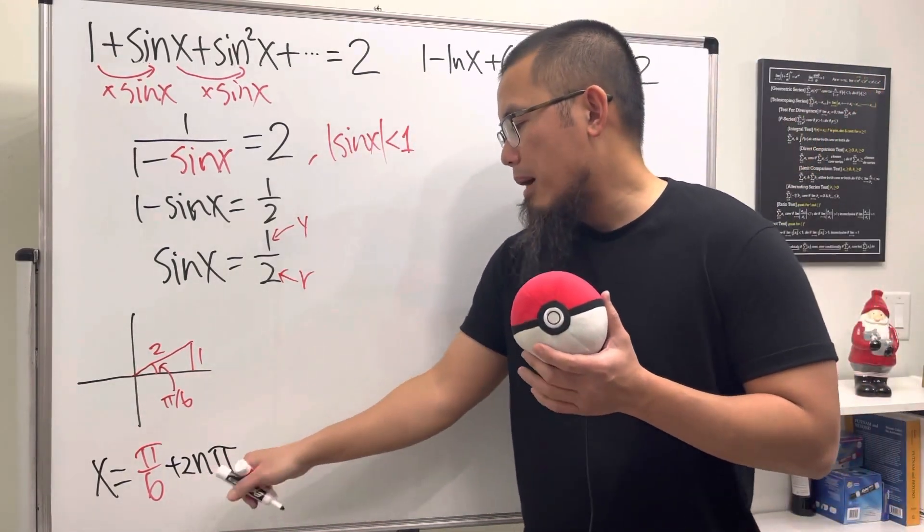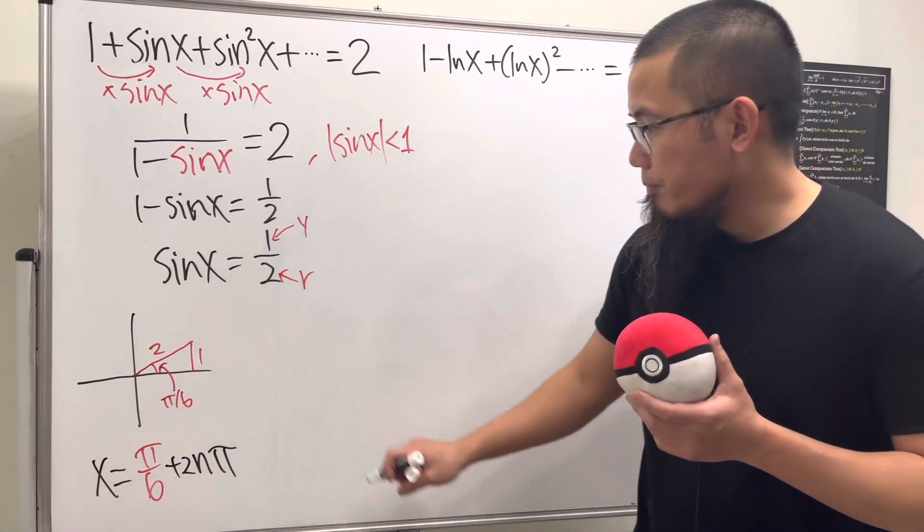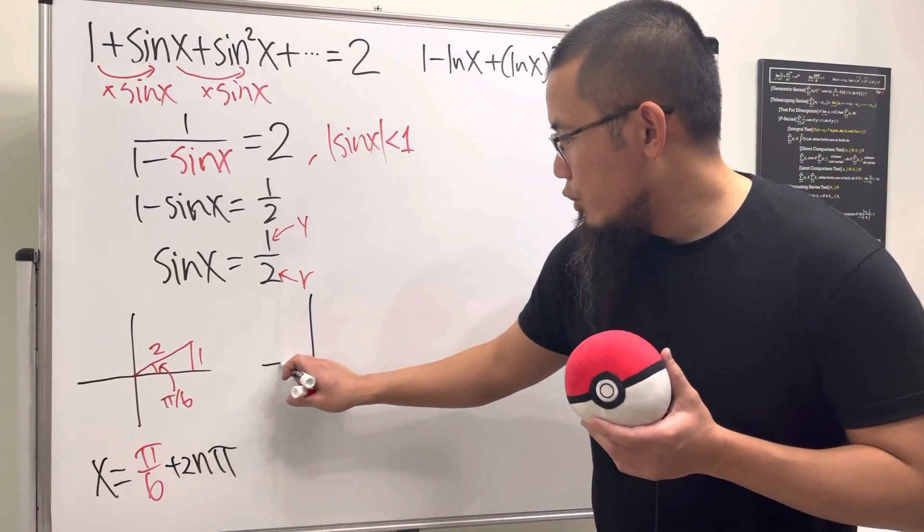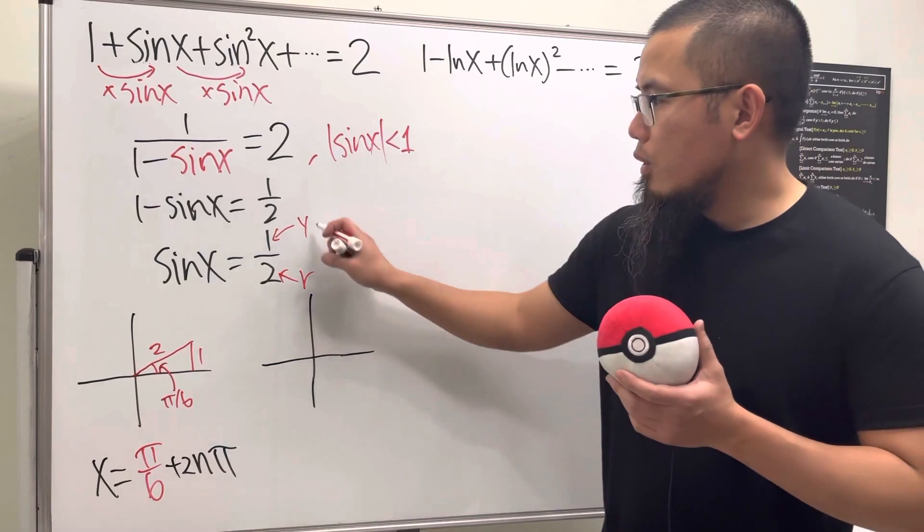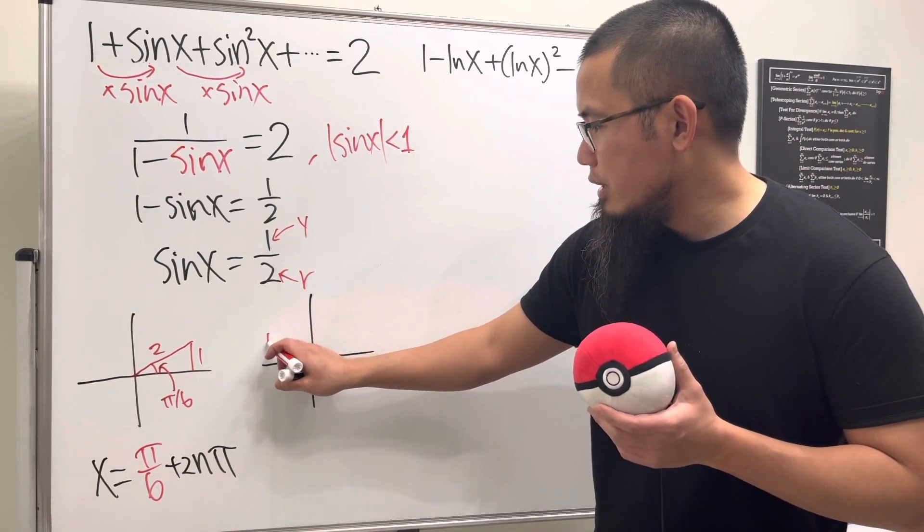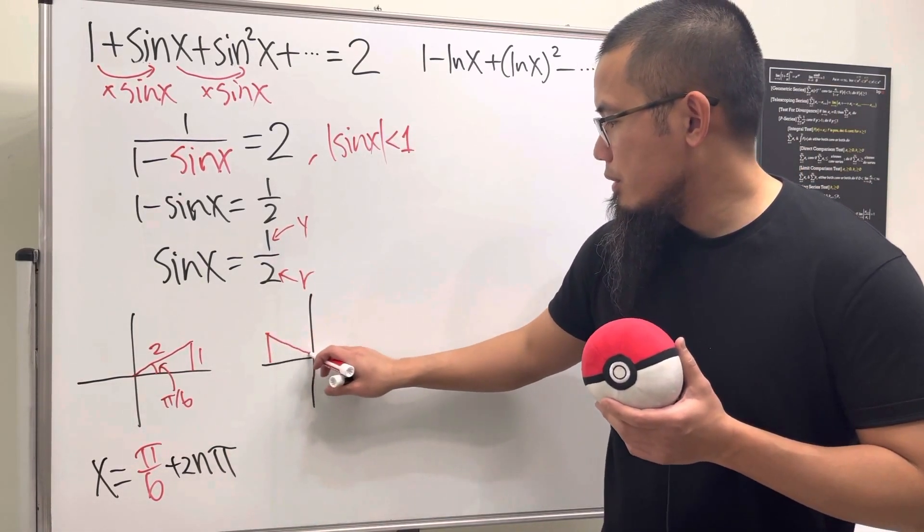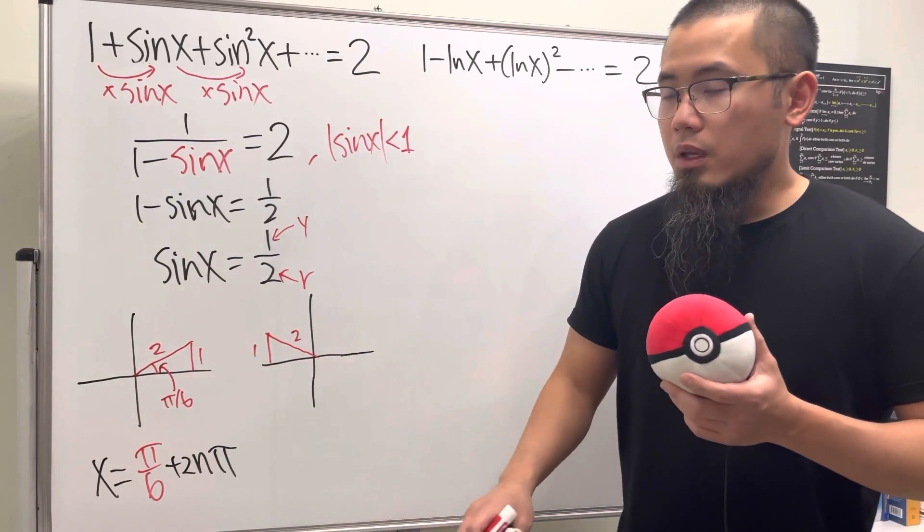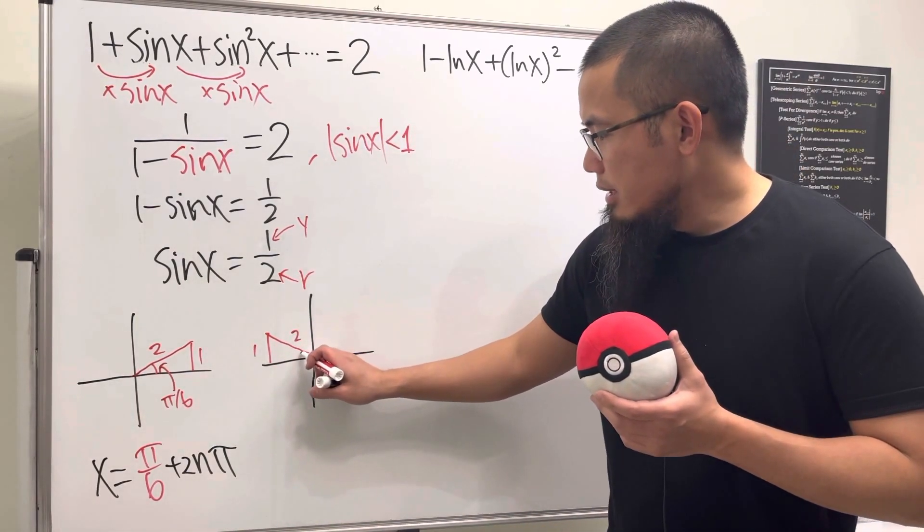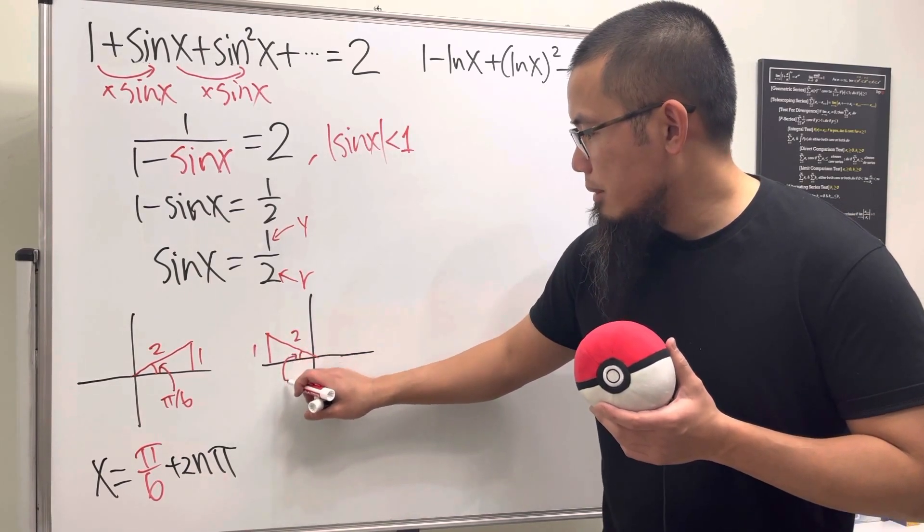And of course you can also use 2kπ, whatever, doesn't really matter that much. Secondly though, remember we could also draw the picture this way: y is positive one, we could have put it down right here, and then r is two. So you see we have one and also two right here. With that said, this time this angle here is π over six.